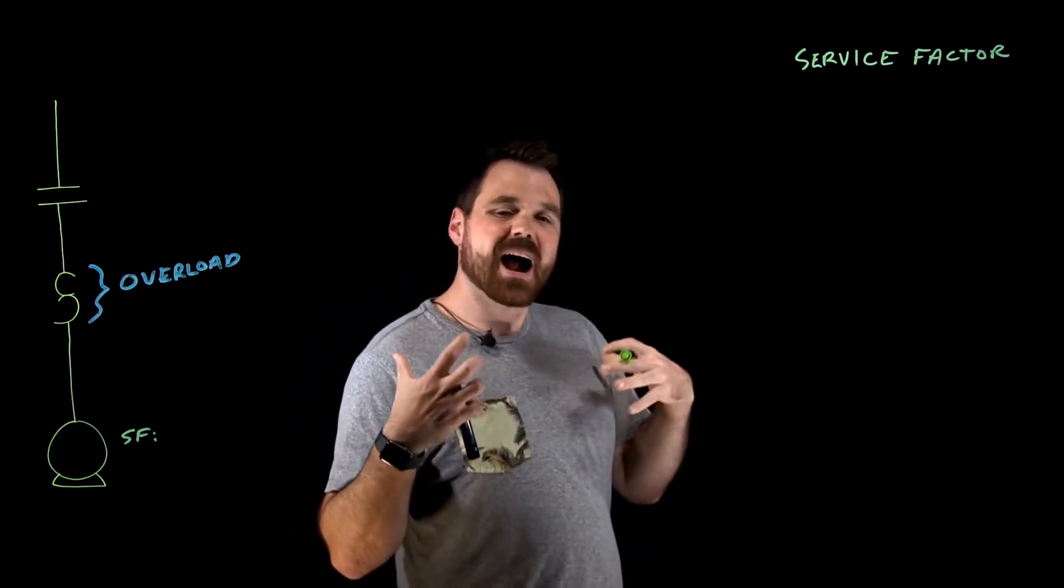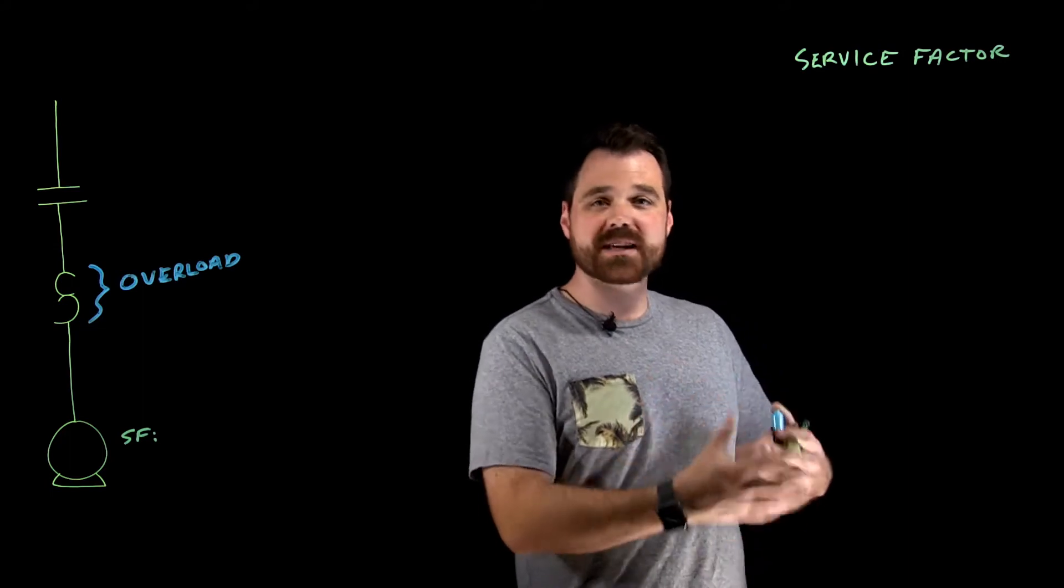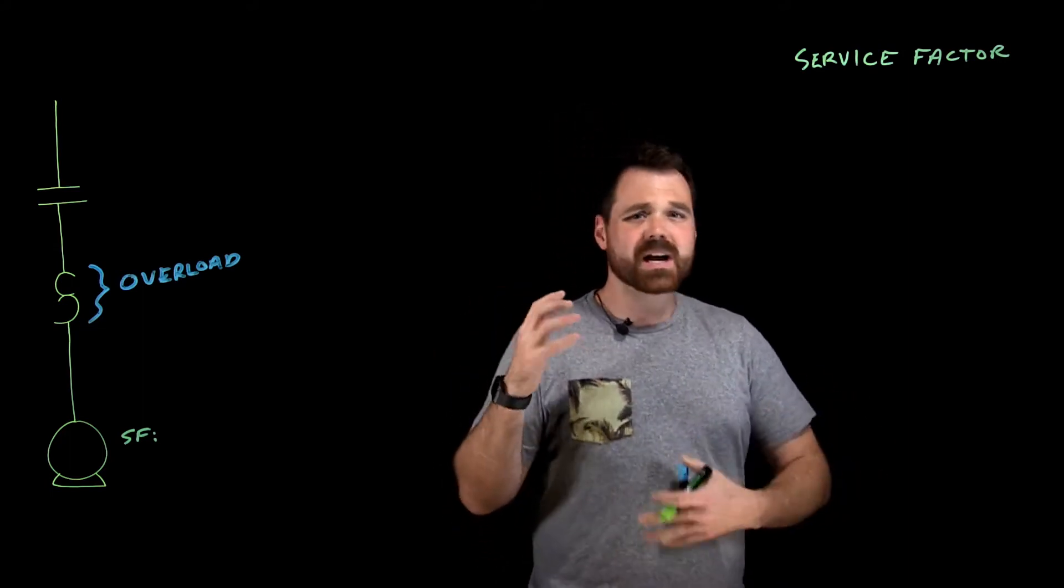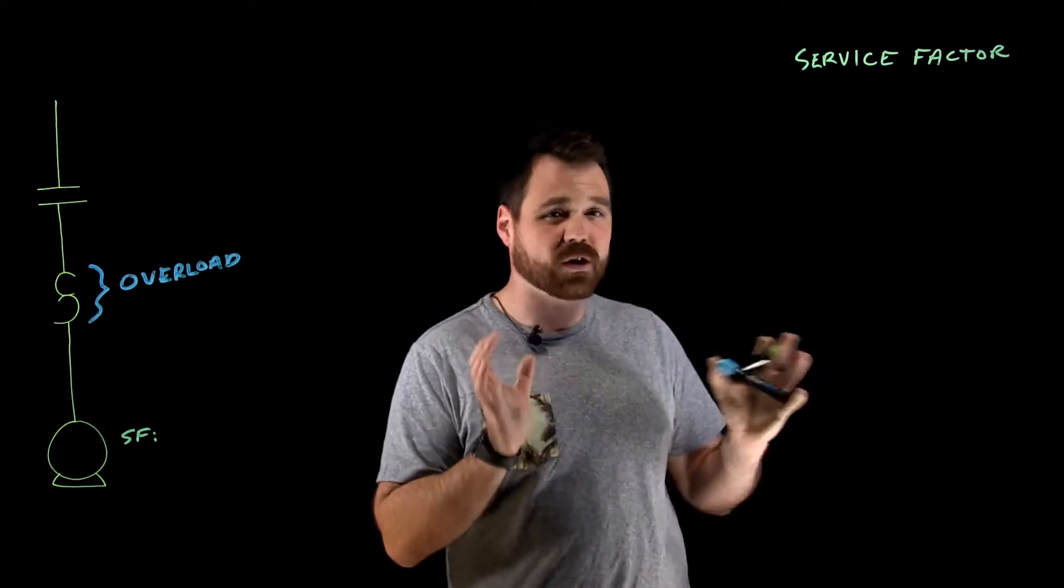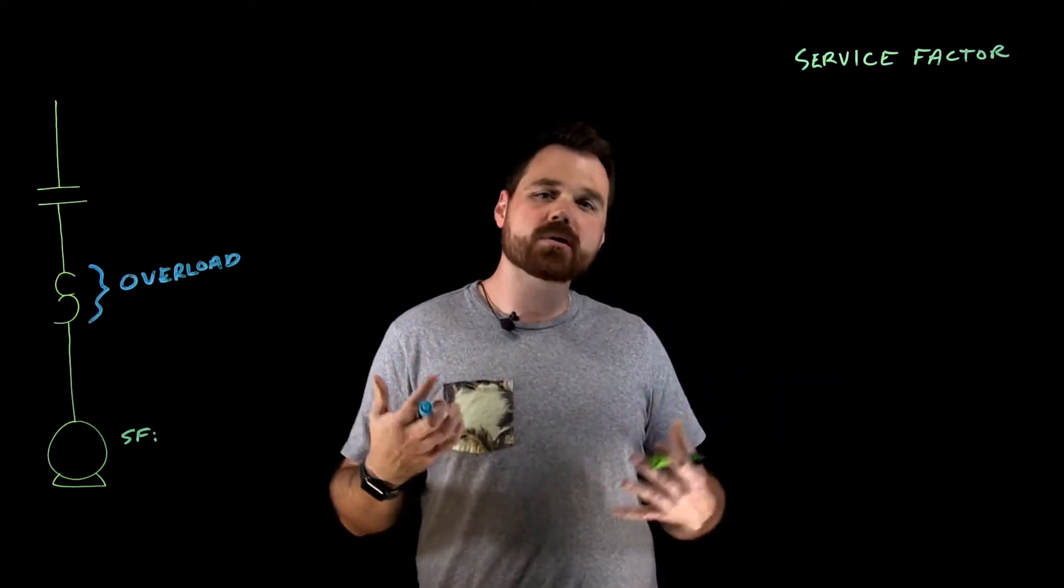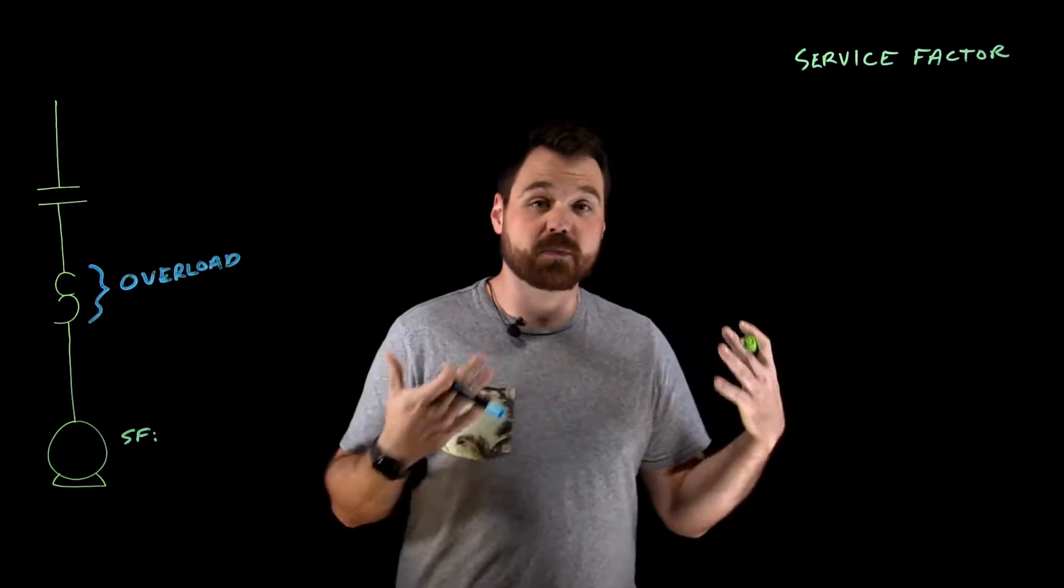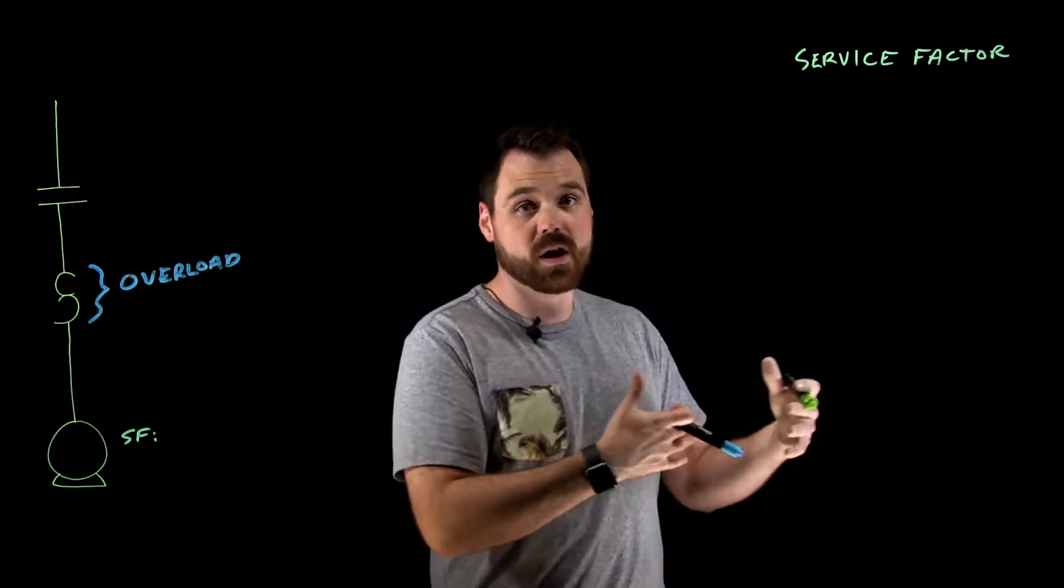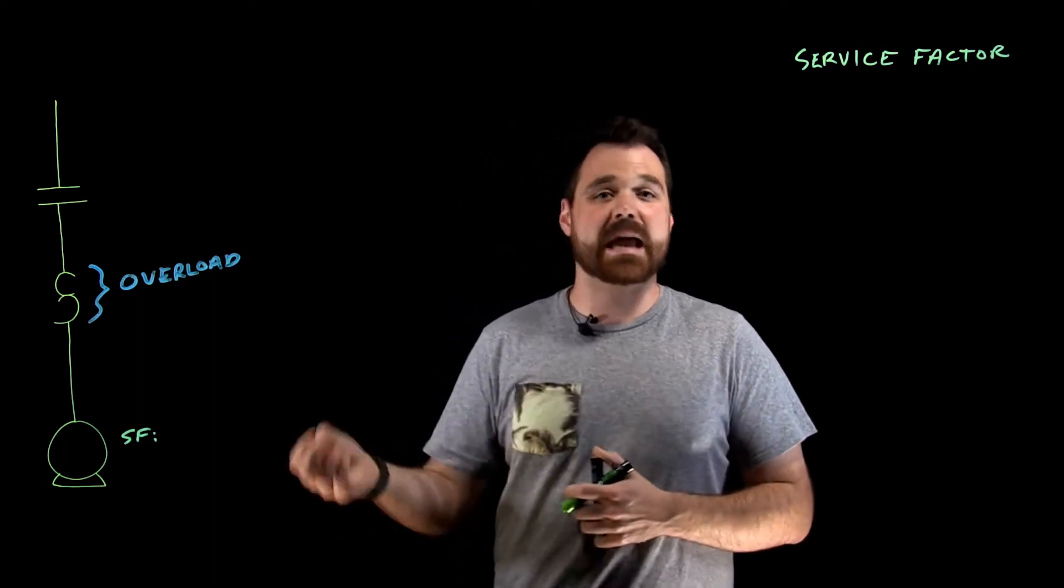That number tells us how much load I can put onto that motor before I start to do damage to the motor. So a typical service factor is going to be between one and 1.4. So if a motor is stamped with a service factor of 1.2, I can put 1.2 the load on it or 120% of the load on it before I start to damage the motor.